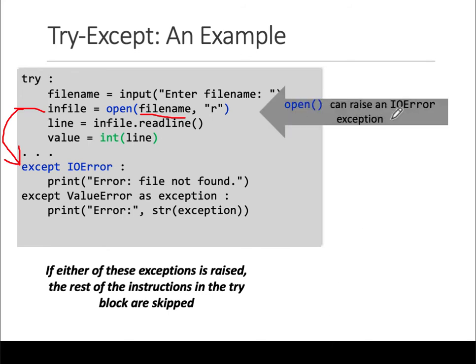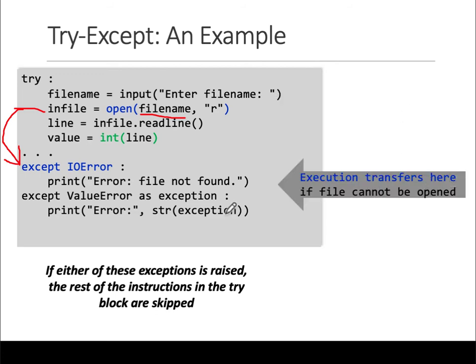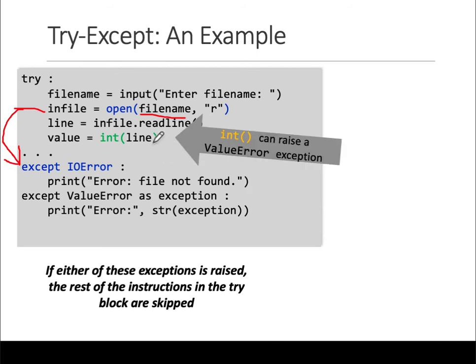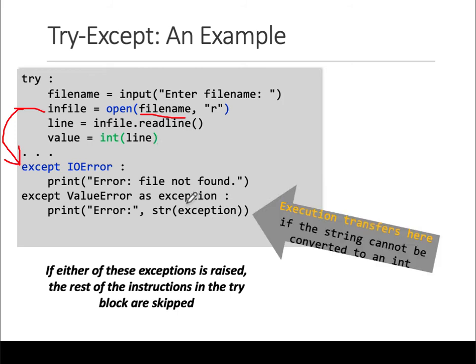Open can raise an IOError exception. When you convert to an integer, that can raise a ValueError exception. If that occurs, control is transferred to that except block. What you could have done is in the except, write another try-except block saying 'please enter the file name again', and then try to open the file.